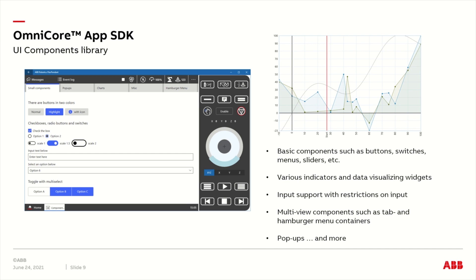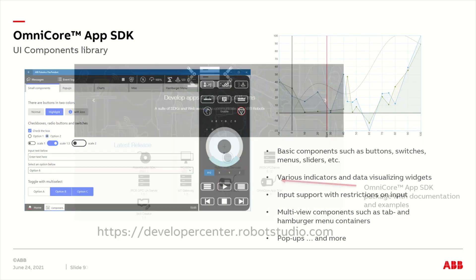When making a web app for Omnicore, it is often desired to have multiple views on the same web page. The UI component library offers several reusable solutions for this, in the form of view containers, which can be navigated using different methods such as tabs or hamburger menus. A copy of the Omnicore App SDK can be found on the Robot Studio Developer Center website. The package includes the libraries in the form of JavaScript and CSS files, and also full documentation and a couple of examples.